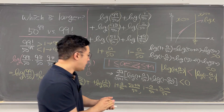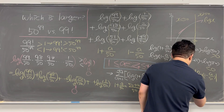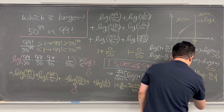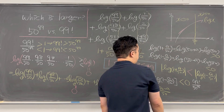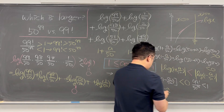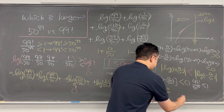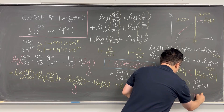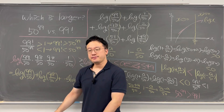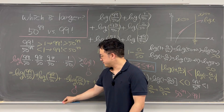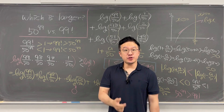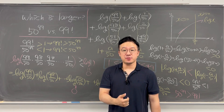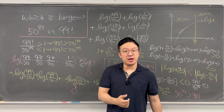That is why 99 factorial over 50 to the power of 99 is less than 1. So we can conclude that 50 to the power of 99 is greater than 99 factorial. Pretty interesting algebra question — I'll be back with more questions like this soon.